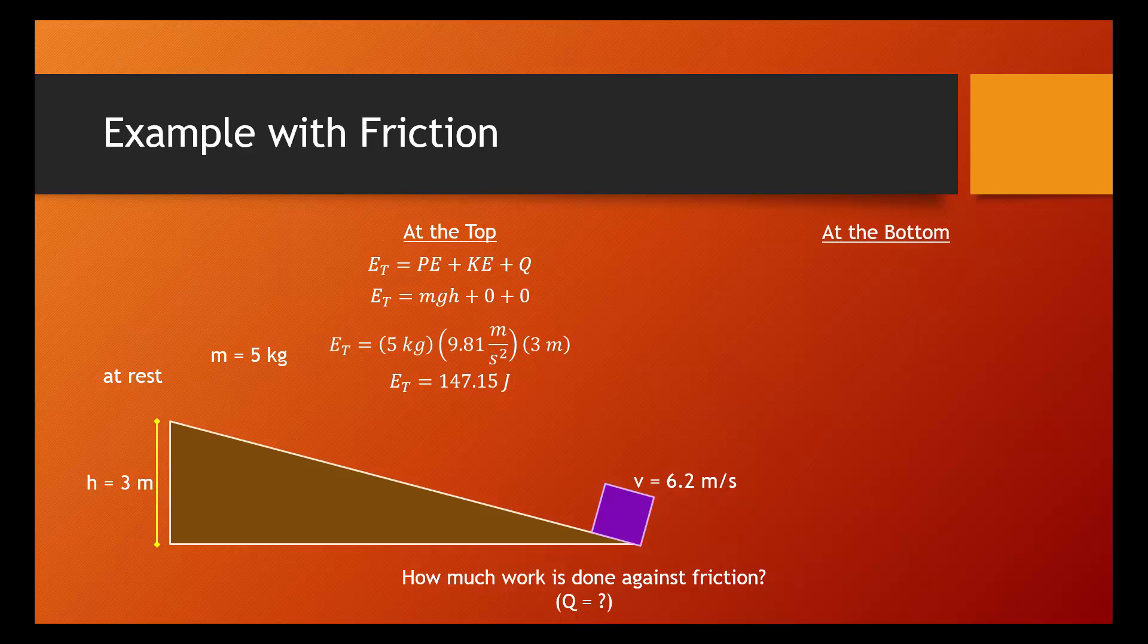Now we can take a look at what's happening to this object at the bottom. Once again, we can start with our equation for total energy, PE plus KE plus Q. At the bottom, the object doesn't have any height anymore, and therefore the potential energy is zero. The kinetic energy can be calculated using the equation one-half mv squared, and we have our Q term, our internal energy. That's what we're looking for. We can substitute in what we know. We know that this object is still going to have a total energy of 147.15 joules. We can substitute in the mass and the velocity, and we can find that at the bottom, the kinetic energy is 96.1 joules.